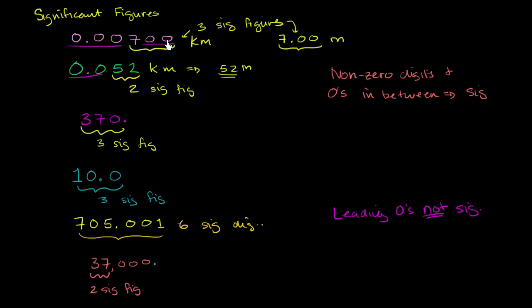So these trailing zeros here, there's actually two trailing zeros over here, and then there's three trailing zeros over here. So trailing zeros. What do we do with them?